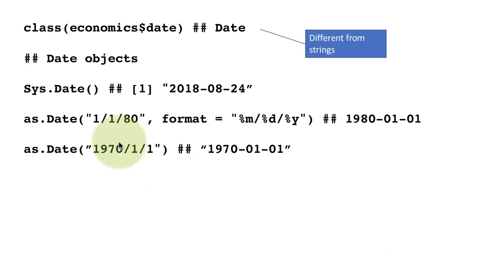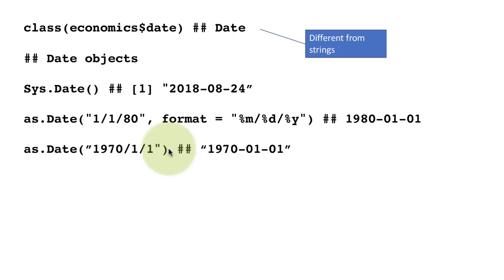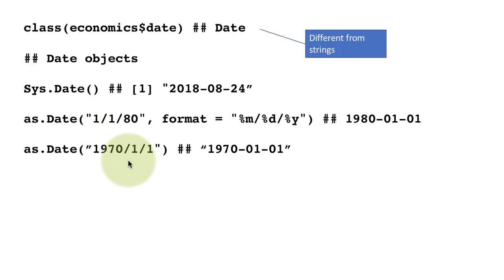When you just do as.Date() without a format string, the system automatically takes care of the formatting if your input data is already formatted as year-month-day. But most of the time, just to be safe, we'll provide a format string anyway.